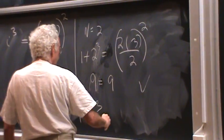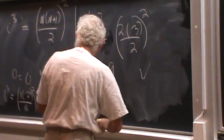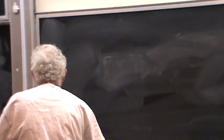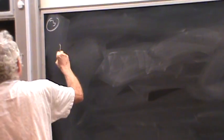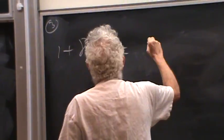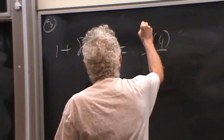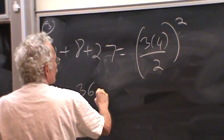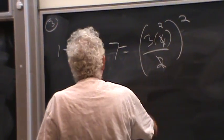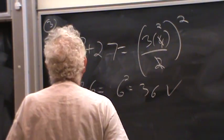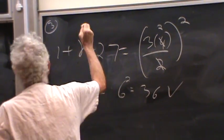And for 3, let's go on here. 1 plus 8 plus 27 equals 3 times 4 over 2 squared, don't tell me, 36, 6 squared, 36. Yeah, it's true for n equals 3.